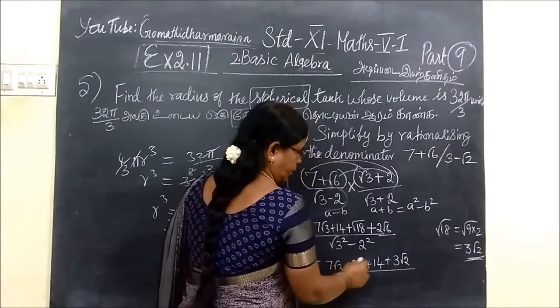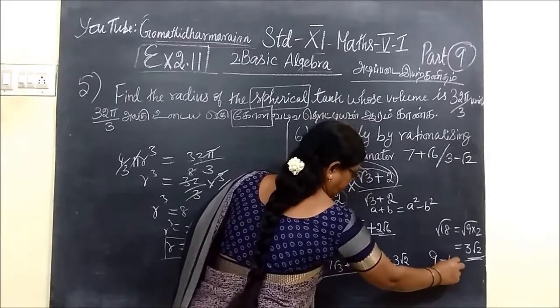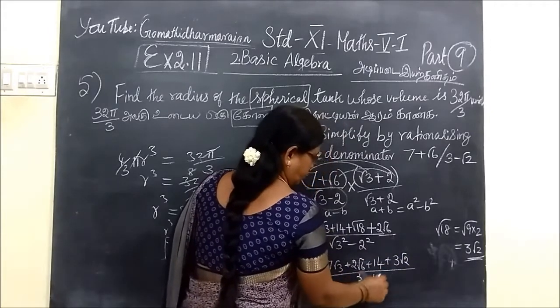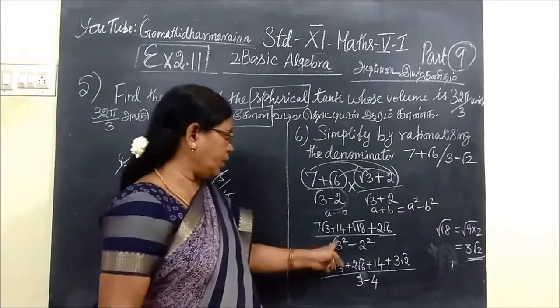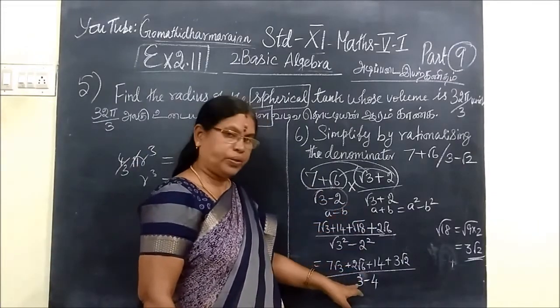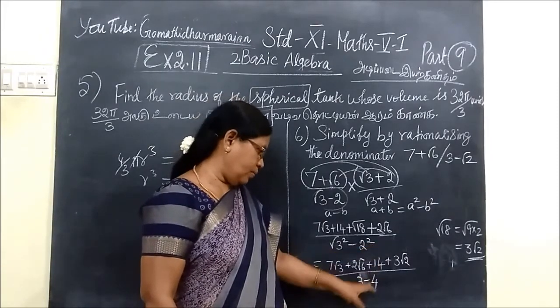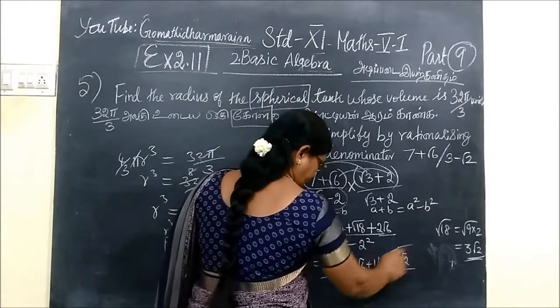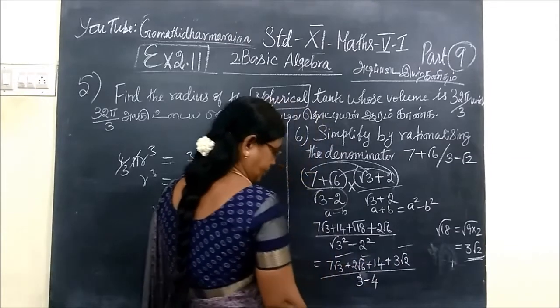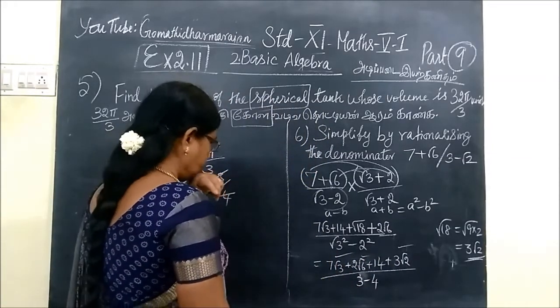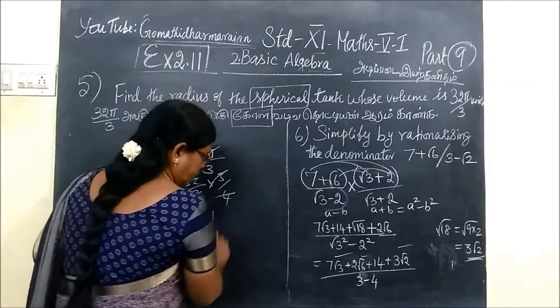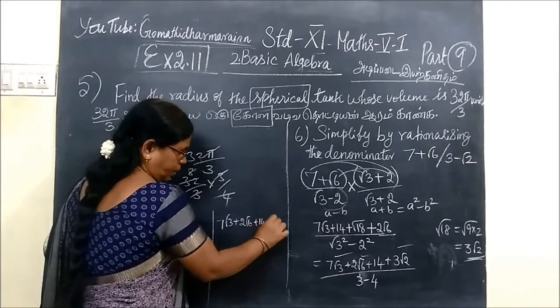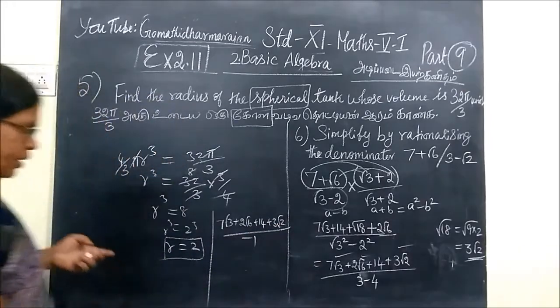So here you can write 3 root 2 by root 3 squared is 3. So 3 minus 4, that is equal to minus 1. Here this is root 3 squared. Root 3 into root 3 is 3, then 2 squared is 4, so all together is minus 1. So this is for the unlike terms. Unlike terms we cannot add. So this is 7 root 3 plus 2 root 6 plus 14 plus 3 root 2 by minus 1.